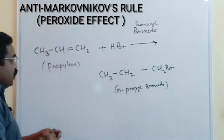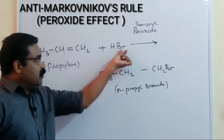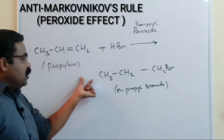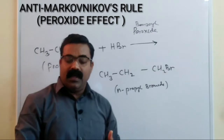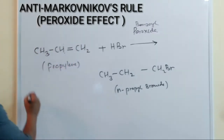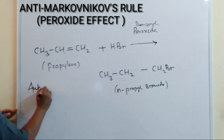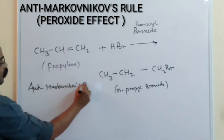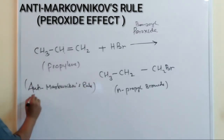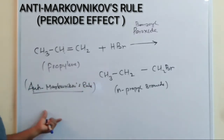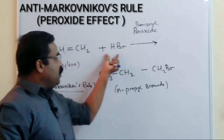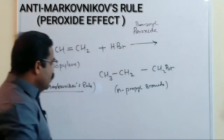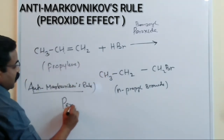So what actually happened here is that the negative part of the addendum, Br, went to that carbon atom which has the maximum number of hydrogen atoms. This is against Markovnikov rule, which is why we call it anti-Markovnikov rule. This anti-Markovnikov rule is also known as the peroxide effect, because this reaction takes place in the presence of a peroxide — here we used benzoyl peroxide.